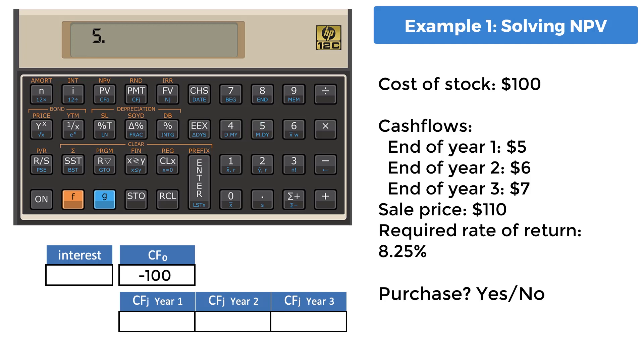Next, the yearly cash flows are entered, in this case one at a time, into CFJ, which is a special memory register that can hold a list of values. The third and last value is $117, because this combines the final year's cash flow of $7 and the $110 stock sale.